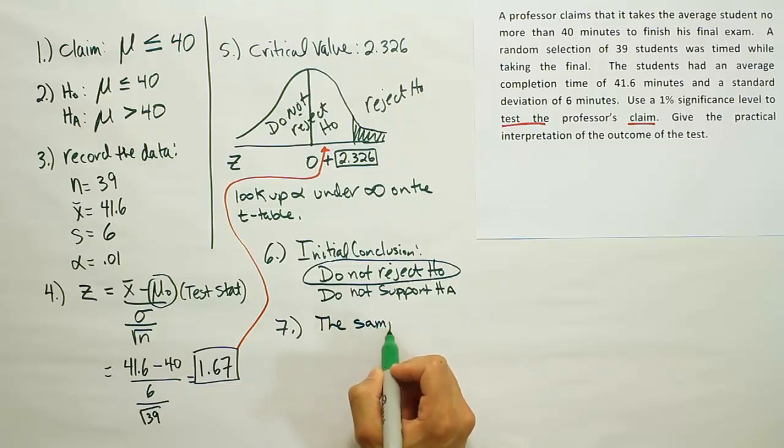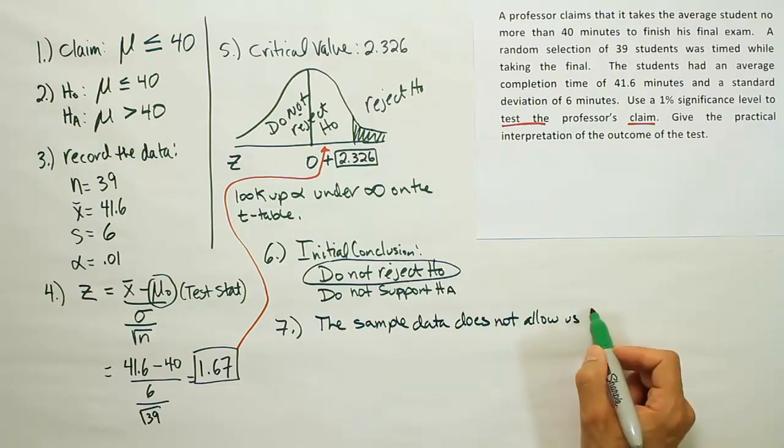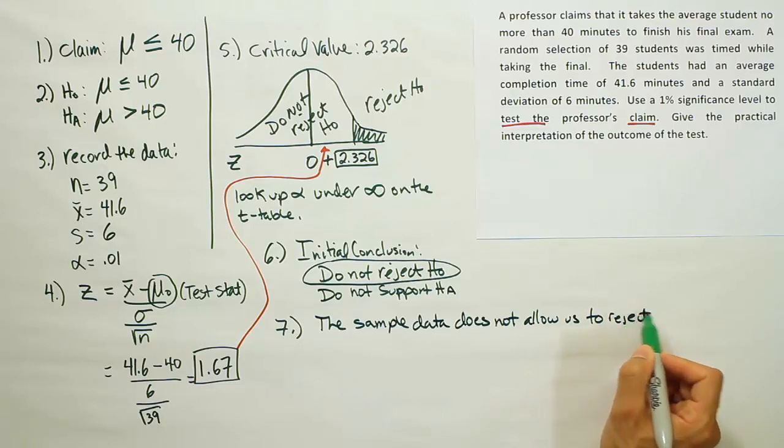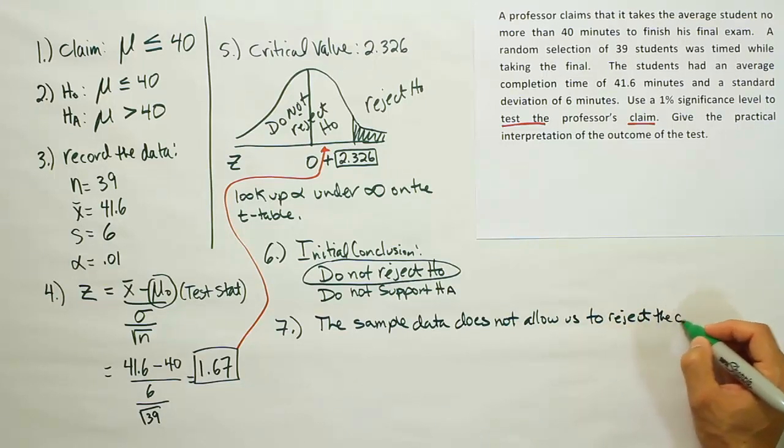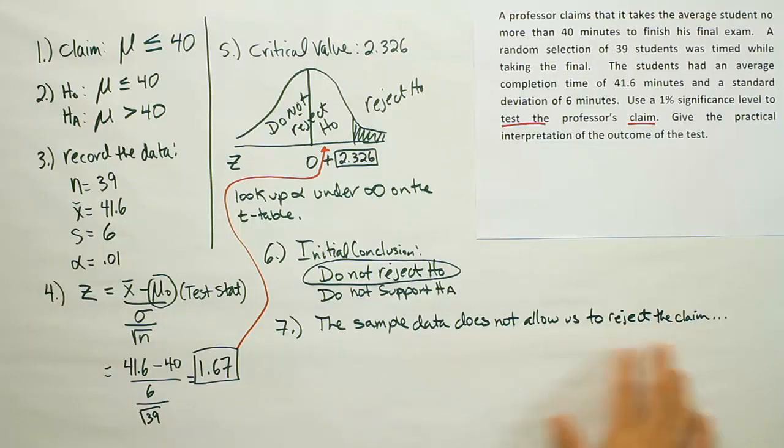So we'll say the sample data does not allow us to reject the claim. The sample data does not allow us to reject the claim. And you can just fill in the claim. The claim that the mean is less than 40, less than or equal to 40. All right. So let's try to come up with the practical interpretation then. We're saying the sample data does not allow us to reject the professor's claim. The professor claimed it doesn't take more than 40 minutes to finish his exam. That it takes no more than that. It's either 40 minutes or less to finish his exam. This sample data does not contradict that basically. We're not able to reject his claim.